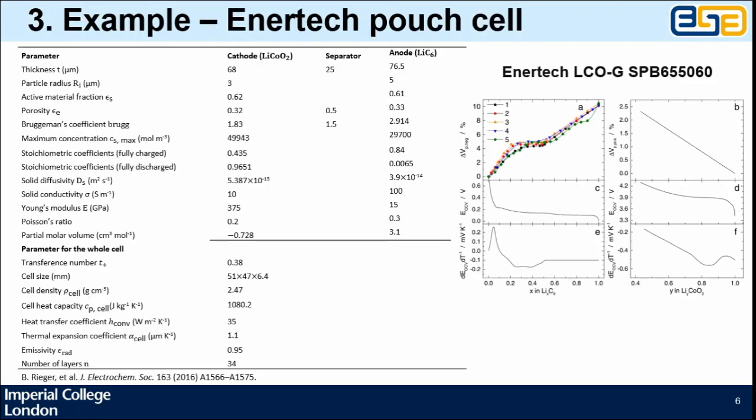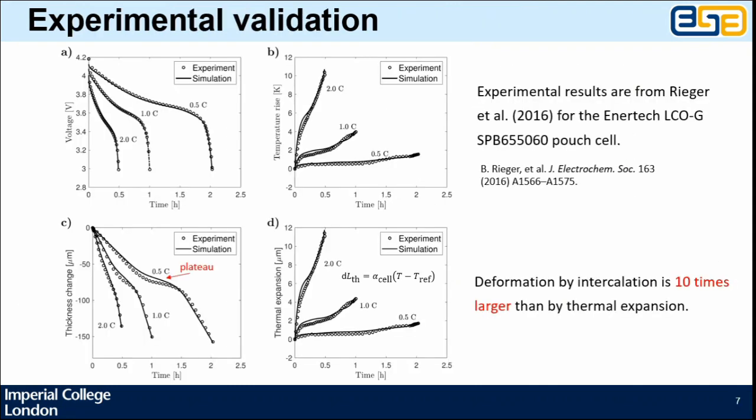We have tested our model with experiments of the Kokam pouch cell. The parameters of this cell are listed in the table, and on the right-hand side are the open circuit voltage, entropy and volume change of both electrode materials. We have validated our battery models with experiments in terms of voltage, temperature and thickness at different C-rates of discharge, where good agreement has been obtained.